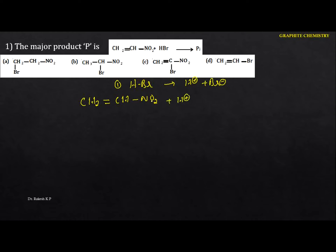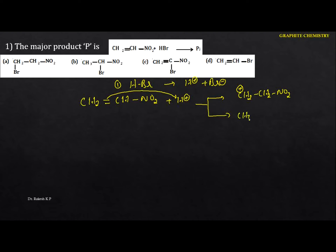So whenever H+ is treated with this compound, the pi electrons interact and we can identify two types of carbocations. One possibility: hydrogen attaches to this carbon, giving +CH2 and CH2−NO2. Another possibility: hydrogen attaches to the other carbon, giving CH3 and +CH2−NO2.